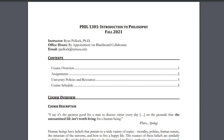If you have questions about anything at any time during this class, the best way to get in touch with me is through email. My listed email address is rpollock.tamusa.edu. I am also available for virtual office hour meetings. If you would like to meet with me, please first send me an email and we can arrange a time. Following this, we can meet through Blackboard Collaborate. Once we have established a time to meet, I will set up a meeting room using this tool.